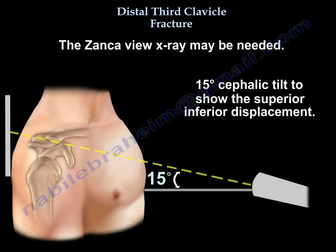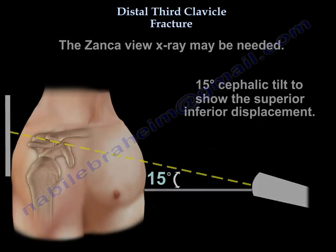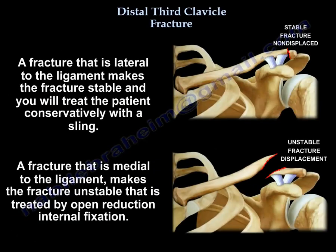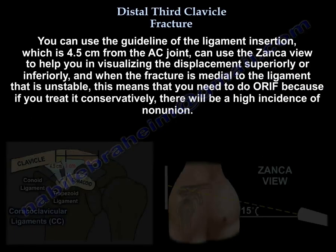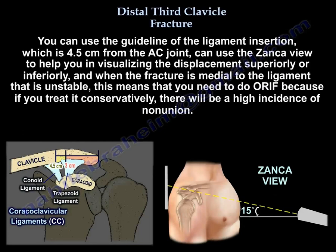You may need the Zanca view. How do you get the Zanca view? A 15-degree cephalic tilt will give you the superior-inferior displacement. A fracture that is lateral to the ligament makes it stable, and you treat the patient conservatively. The Zanca view helps you visualize displacement superiorly or inferiorly.